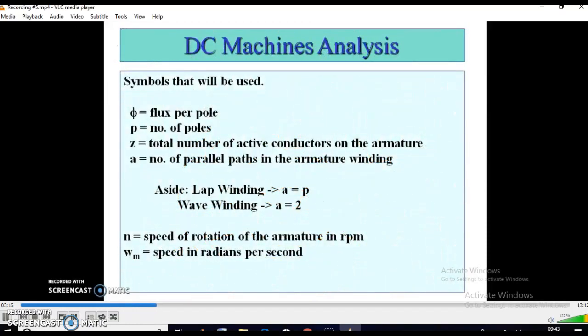Now, the symbols we are using here: phi for the flux per pole, Z for the total number of active conductors, A is the number of parallel paths. In DC machines, for lap winding, the parallel path is always equal to number of poles P, and for wave winding, parallel path is equal to 2. Small n denotes the rotation of the armature in RPM. Omega m is the speed in radians per second.